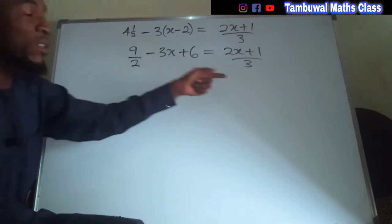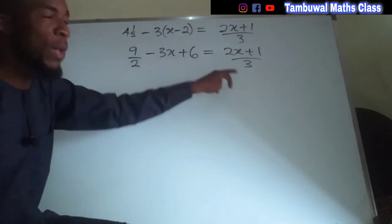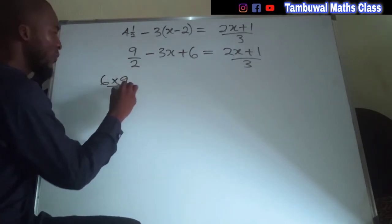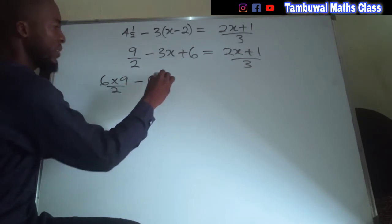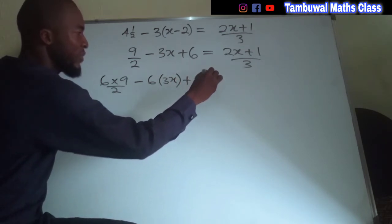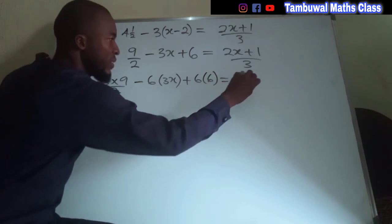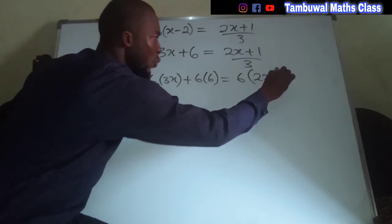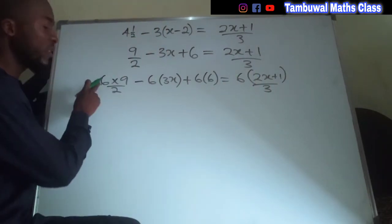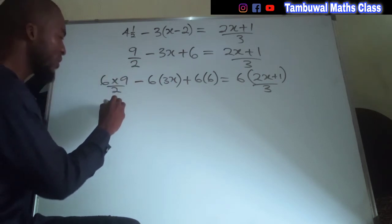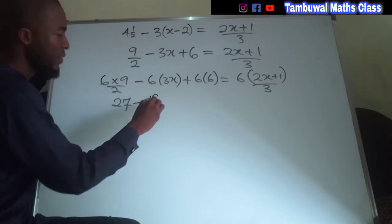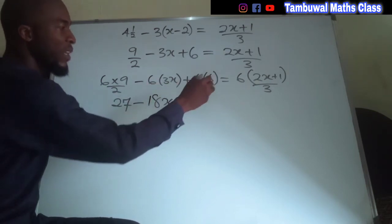The LCM between 2 and 3 is 6, so we multiply each term by 6. Six times (9 over 2) minus 6 times 3x plus 6 times 6 equals 6 times (2x plus 1) all divided by 3. Now let us simplify: 6 divided by 2 is 3, then 3 times 9 is 27. We have minus 18x plus 36.